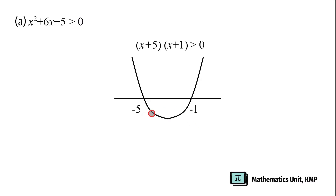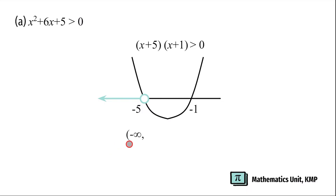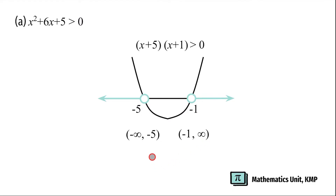Make sure that the smaller value is on the left-hand side and the larger value is on the right-hand side. Now, the solution: since y is greater than 0, the left arrow means x is approaching from negative infinity to -5 exclusively, and from -1 exclusively to positive infinity on the right. We combine these two infinite intervals with a union symbol.